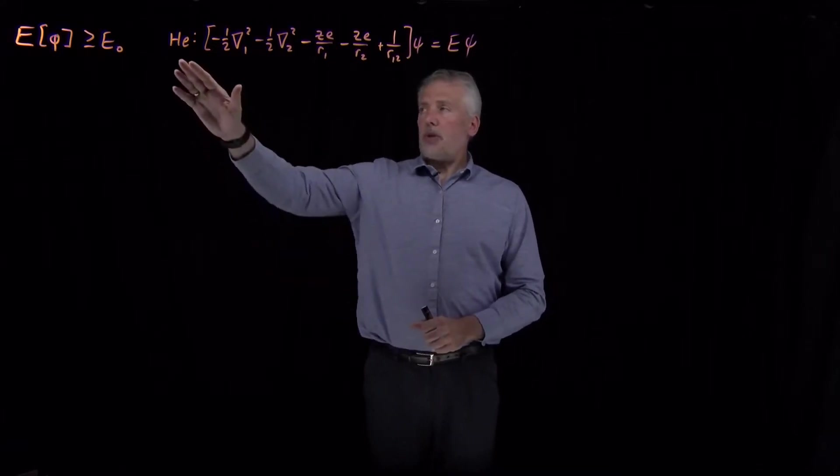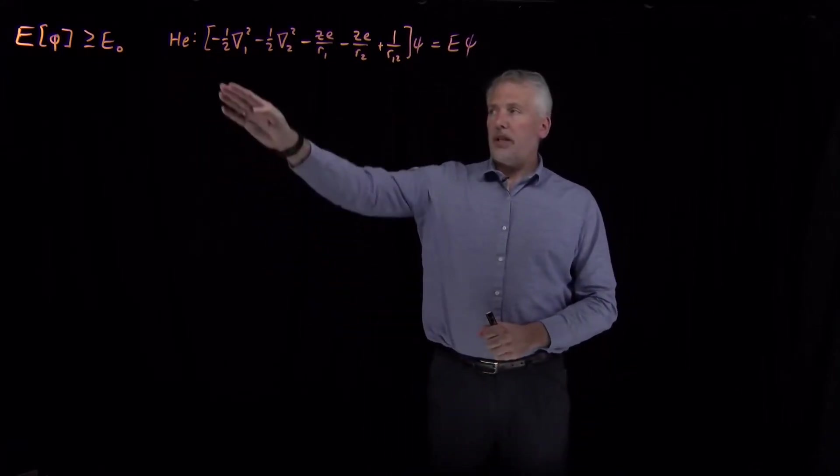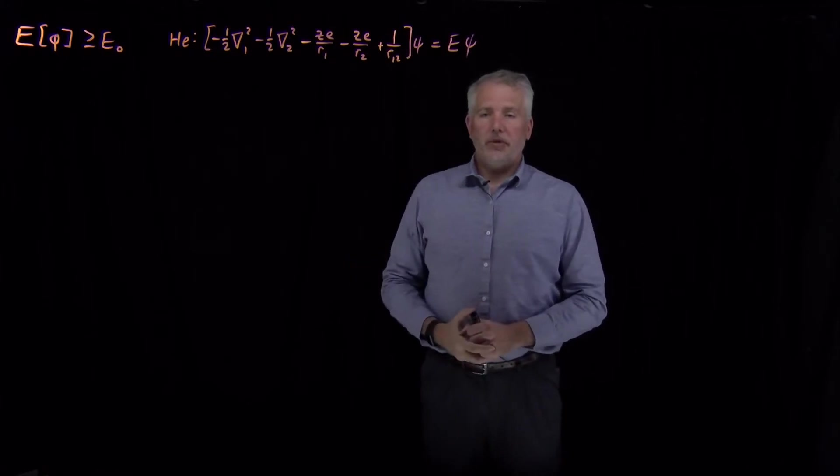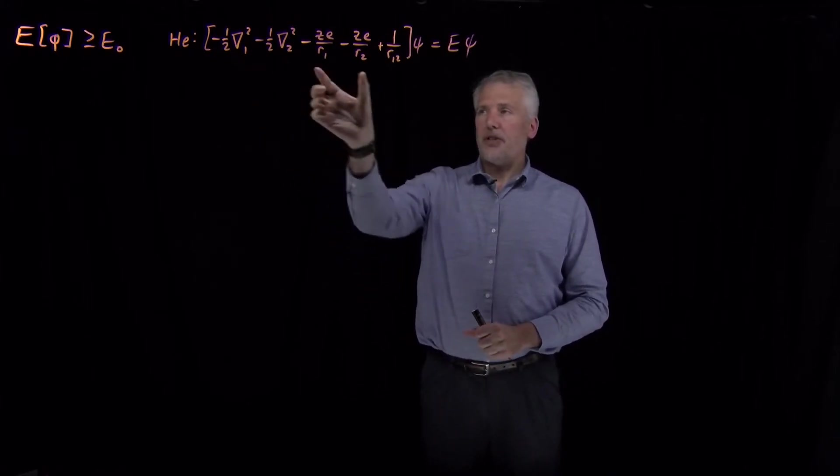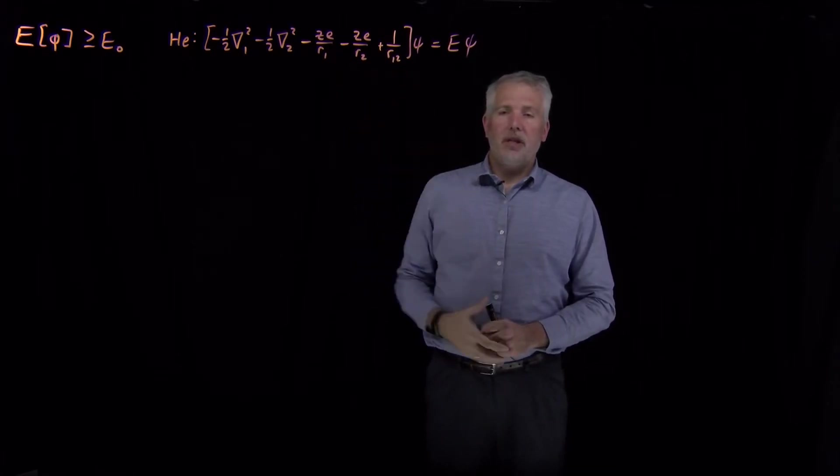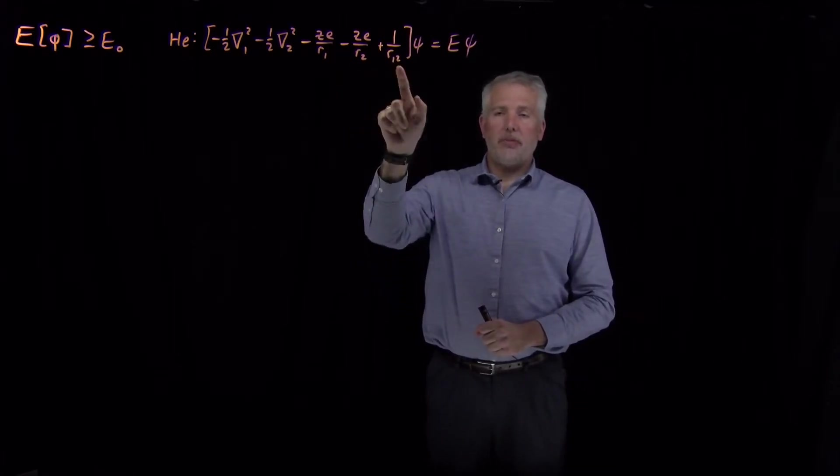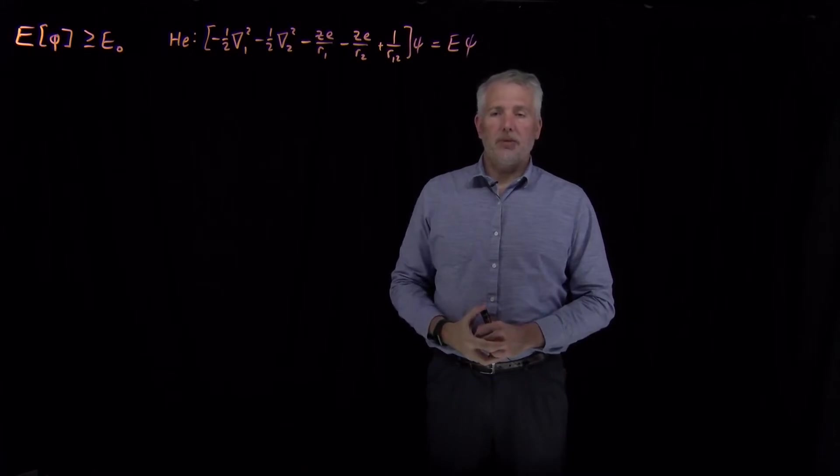So remember for the helium atom, we've seen how to write down Schrödinger's equation, and we've decided that we can't solve that Schrödinger equation on paper. It's got some kinetic energy terms and potential energy terms, but unfortunately this electron-electron repulsion term makes it non-separable, which makes it hard to solve.